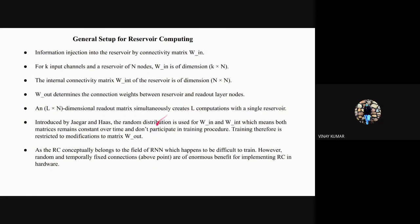What really stands out is when Jaeger and Haas introduced random distribution of W_input and W_internal matrix, which are constant over time. These matrices don't participate in the training procedure.